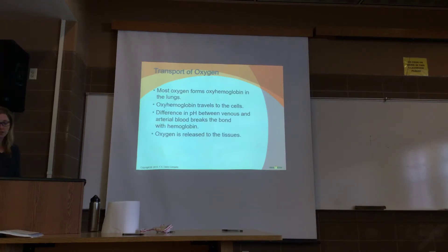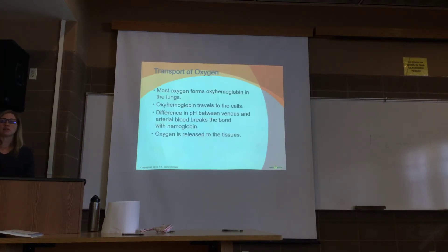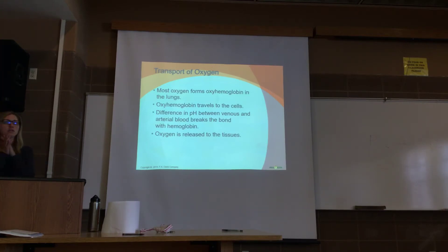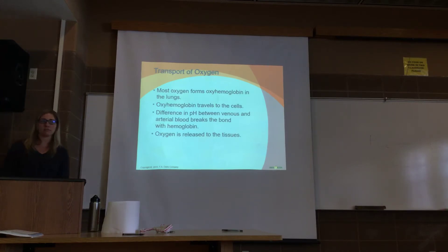The red blood cell — the erythrocyte — is responsible for carrying oxygen through the bloodstream. Hemoglobin is the protein structure within the erythrocyte that carries the oxygen. Each hemoglobin has four heme groups and four globins, so four oxygen molecules can be carried by one hemoglobin. Of all the oxygen that enters the body, about 1.5% dissolves in blood plasma and the remaining 98.5% binds to hemoglobin.